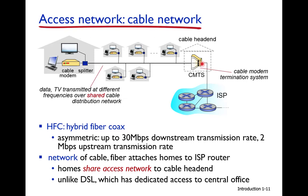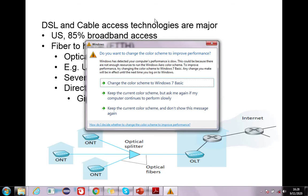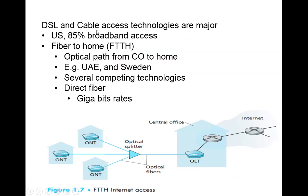DSL and cable are the two major technologies used for residential home access networks. In the US, 85 percent of broadband access is DSL and cable based. However, a newer technology called Fiber to the Home (FTTH) is emerging.